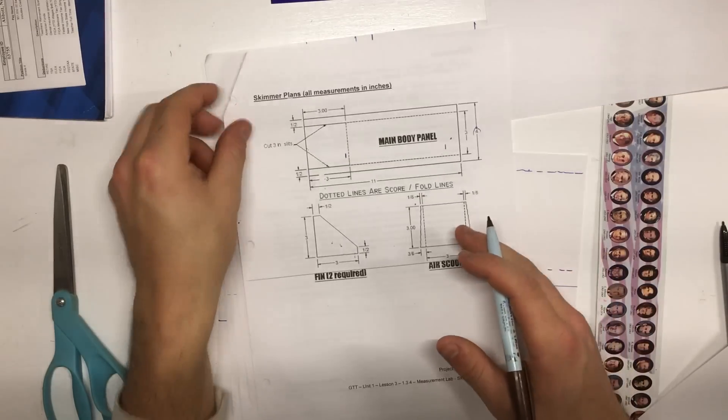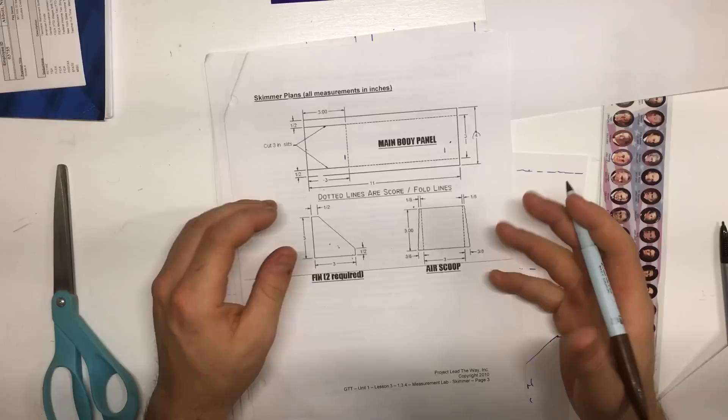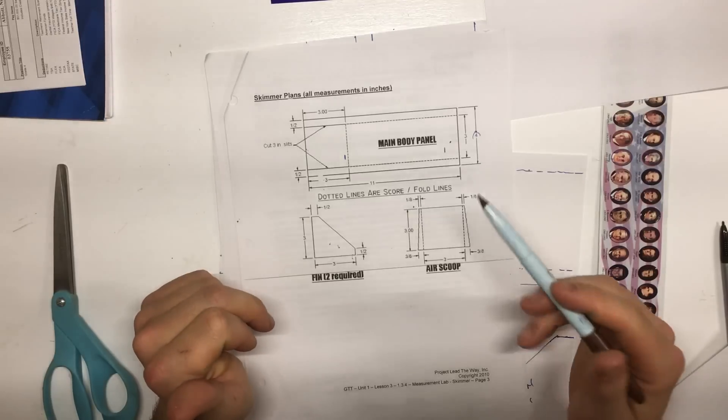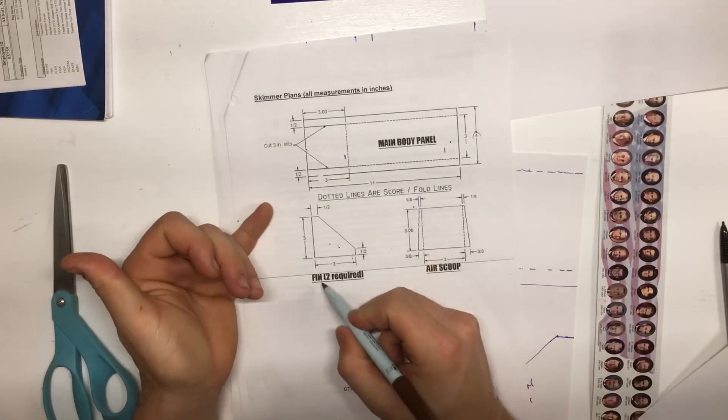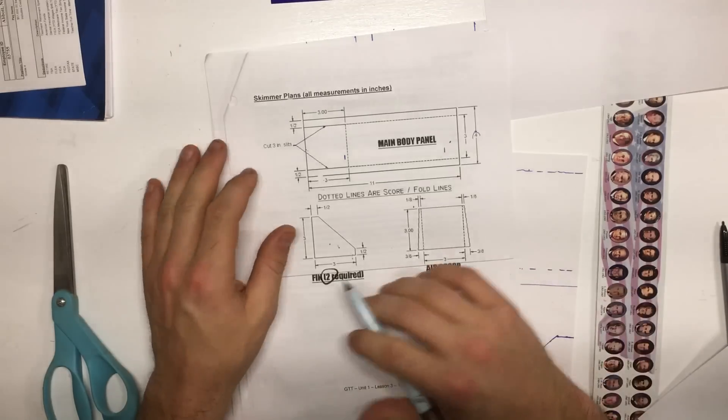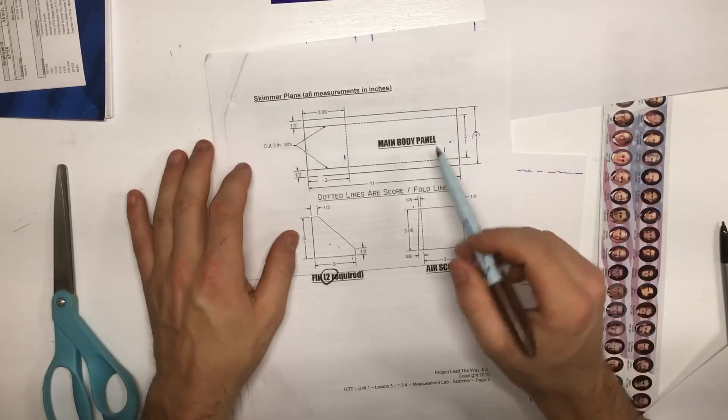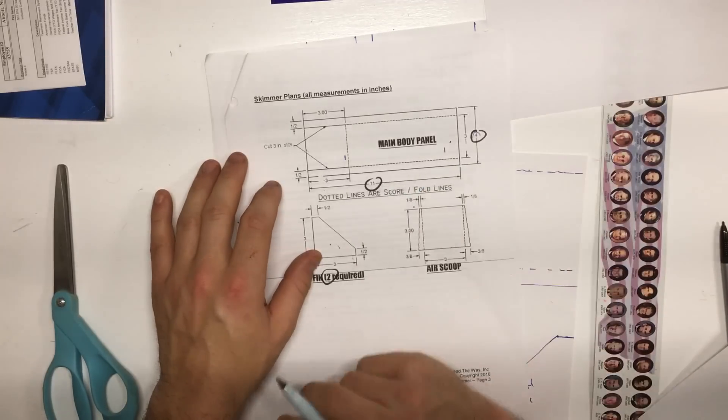On the third sheet of your lab, or your plan sheet, you're going to notice what I call a cut sheet or a layout. Okay, this is not exactly how we're going to lay it out because we're all required to make two fins. However, it's going to give us the major dimensions that we need for each of our objects, such as the body panel, which you'll notice is 11 inches by 4 inches.